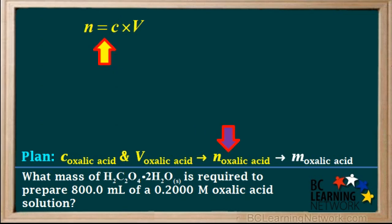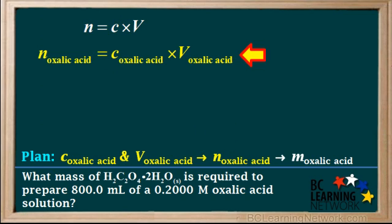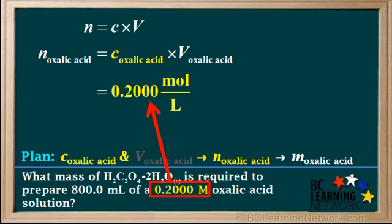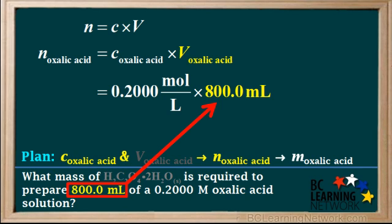So our first step is to use the concentration and volume to find the number of moles n. We write n equals C times V, or n oxalic acid is equal to C oxalic acid times V oxalic acid. We'll substitute 0.2 molar for the concentration. Here it's best to express it as moles per liter instead of the capital M for molarity. The two ways are equivalent and the unit moles per liter works better for cancelling units.